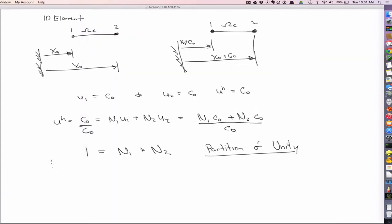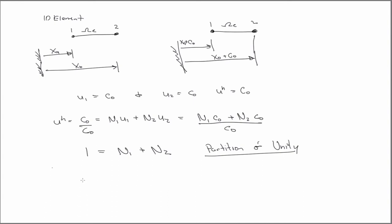And shape functions also have what's called a Kronecker delta property. And that is that N I evaluated at the node J will be zero if I not equal to J, and one if I equals J. So this is the Kronecker delta property. And the reason is it has the same form as the Kronecker delta function, right? So if I equal to J, then you have one, otherwise zero.